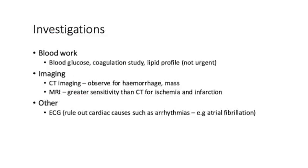In terms of investigations, blood work analysis to consider includes blood glucose, coagulation studies, and lipid profile, although lipid profile would not be considered urgent in the immediate presentation. Imaging modalities include CT imaging, which is essential for observing hemorrhage or mass lesion, and MRI, which provides greater sensitivity than CT for ischemic changes and infarction of the brain. ECG should also be considered, predominantly to rule out cardiac causes such as arrhythmias — in particular atrial fibrillation — which is associated with a greater risk of developing thrombosis that can travel via the internal carotid and become lodged in the fine capillaries and arteries within the brain.